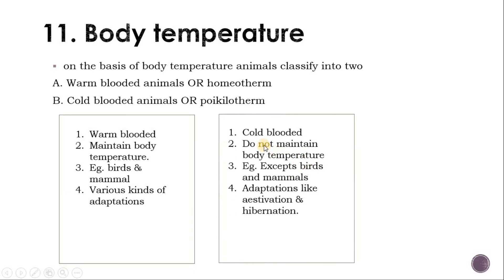What is a cold-blooded animal? Cold-blooded animals do not maintain their body temperature, so the body temperature fluctuates. If the outer temperature rises, the body temperature also rises; if it lowers, the body temperature also gets lower. Examples — except birds and mammals — are amphibia, reptiles, and some echinoderms. They show adaptations like estivation (summer sleep) and hibernation (winter sleep) because at a certain level of temperature fluctuation the animal can survive, but at extreme high temperatures protein denatures and metabolic activity stops.